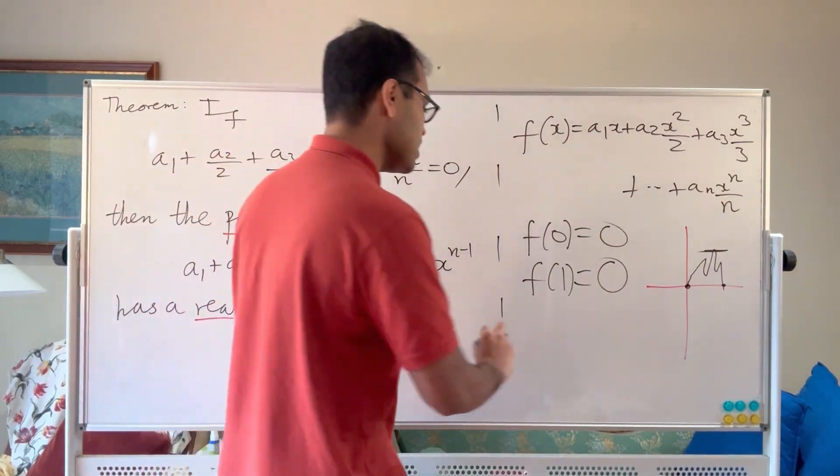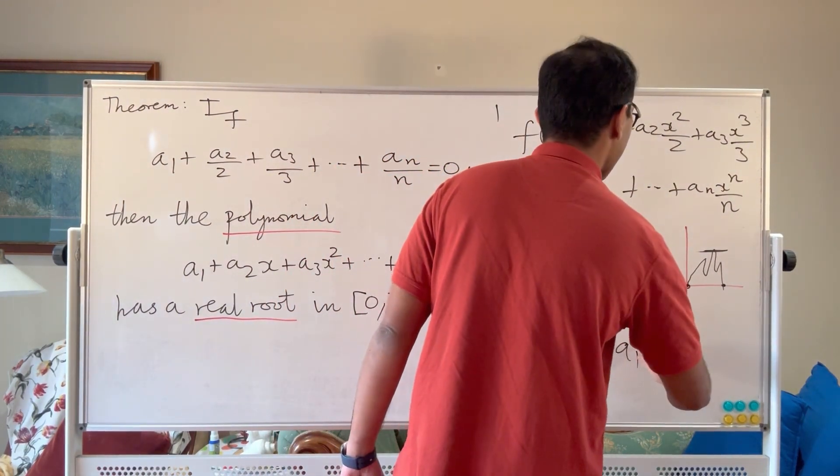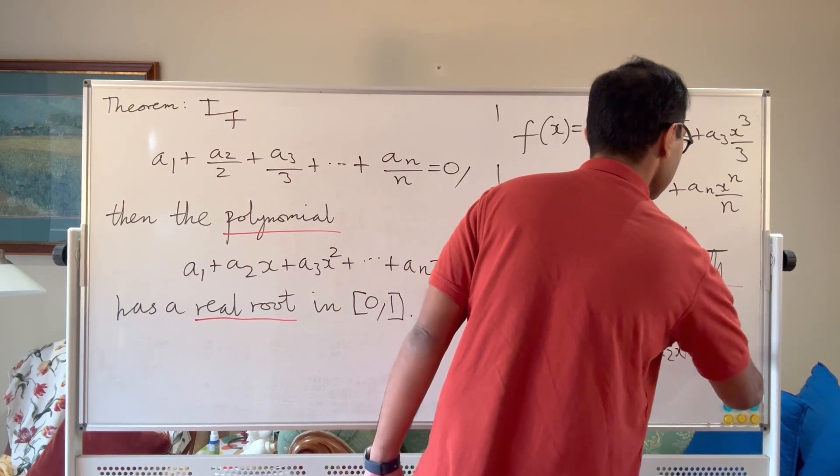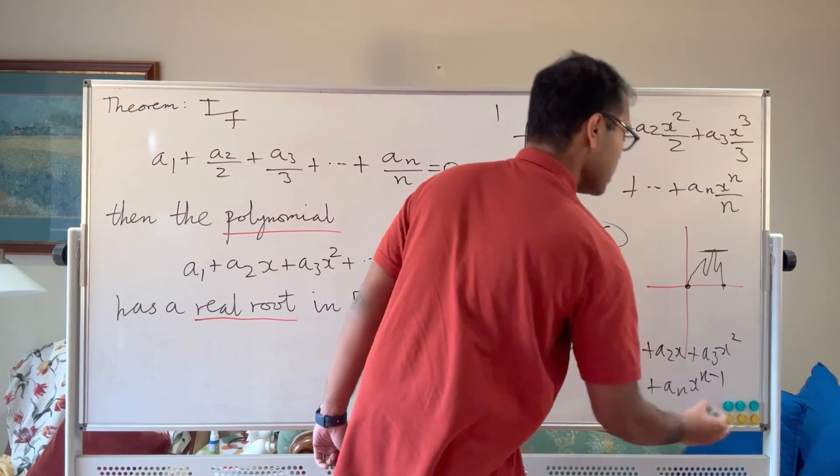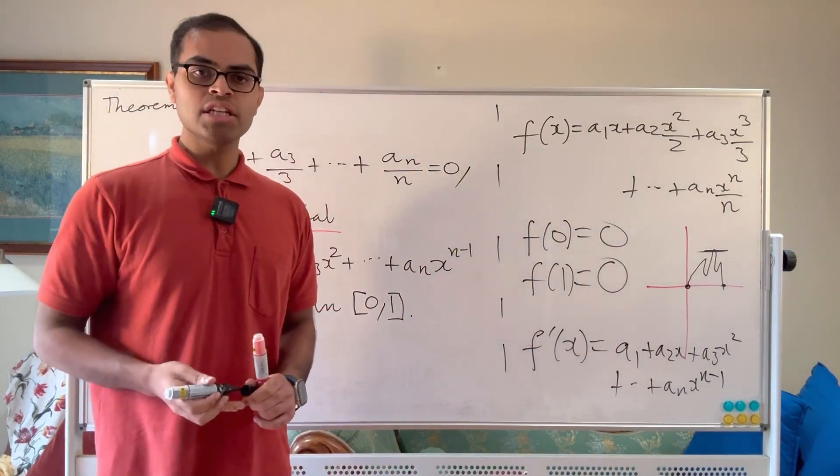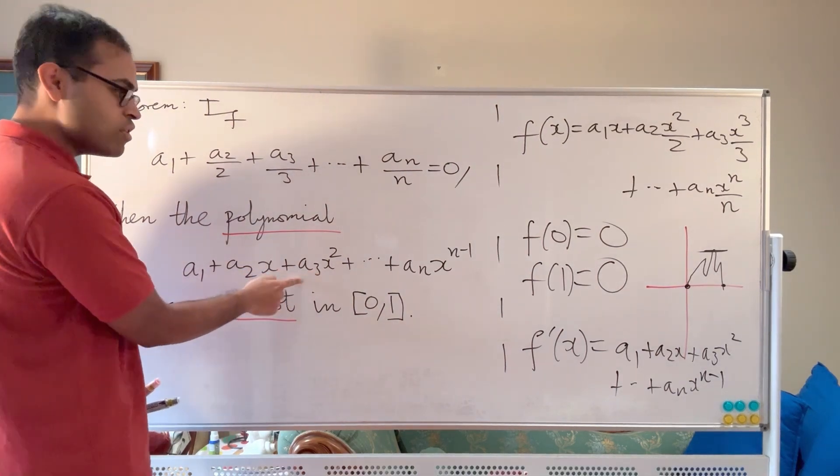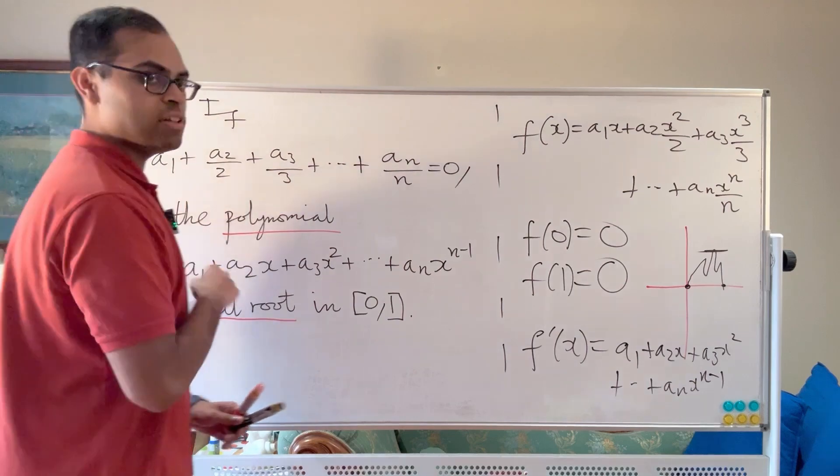And what is its derivative? Well, f'(x) is just going to equal a1 plus a2x plus a3x squared all the way up to anx to the n minus 1. That's going to be our derivative of our function. And that's so beautiful because that's actually our original polynomial. So we know now that our original polynomial, being the derivative, has a real root in the interval [0,1].